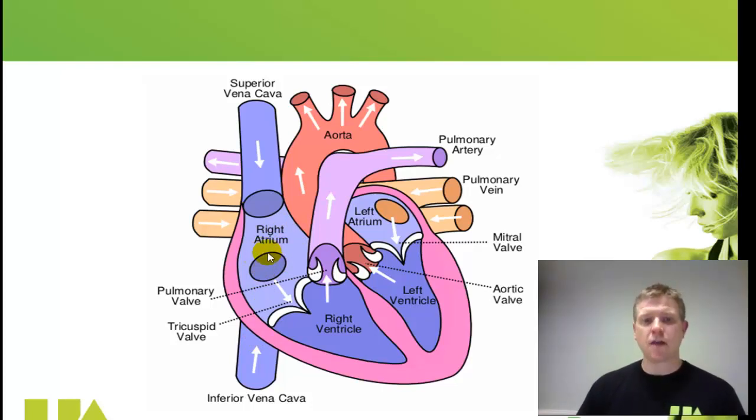Now from the right atrium it then filters down into the right ventricle. Now that's the deoxygenated blood. So what do we do with it now? We now need that blood to become oxygenated blood to try and deliver the oxygen into the working muscles.